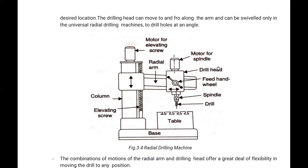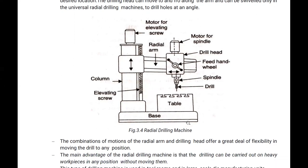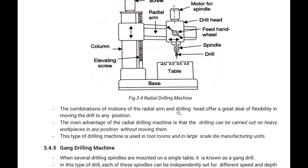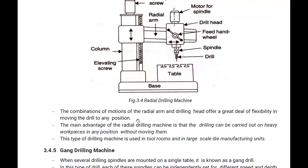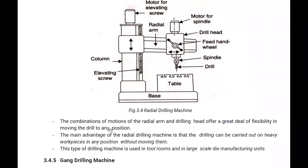The drilling head can be moved to and fro along the arm, and in a universal radial drilling machine it can also be swiveled to drill holes at an angle. The combination of motions of the radial arm and drilling head offers a great deal of flexibility in moving the drill to any position.